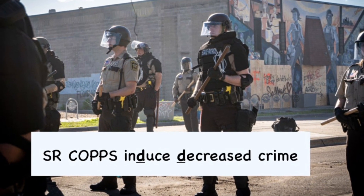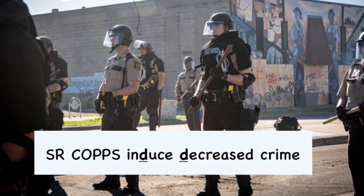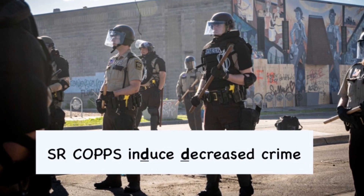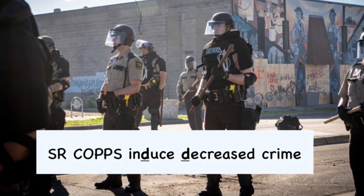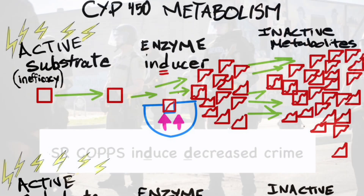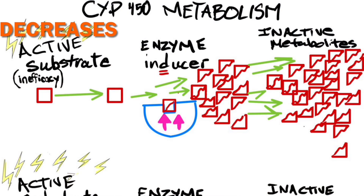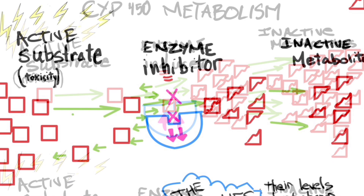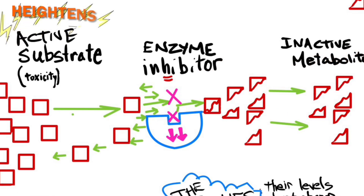Let's say: SENIOR COPS INDUCE DECREASED CRIME. Inducers decrease, while inhibitors heighten the level of the substrate in the blood.